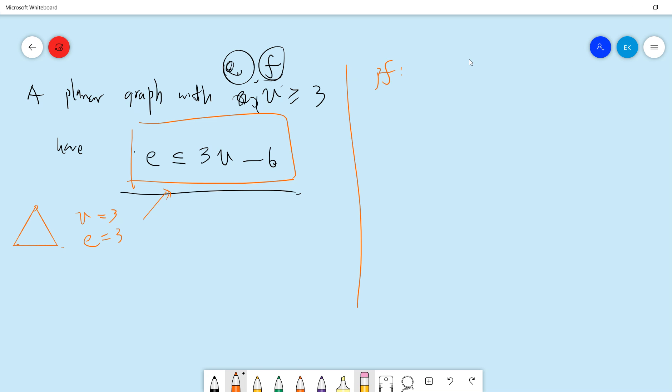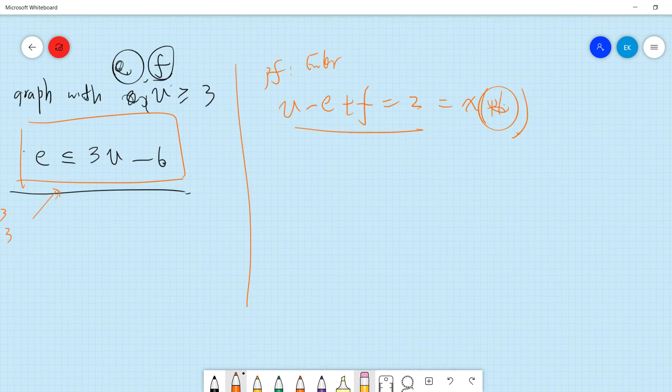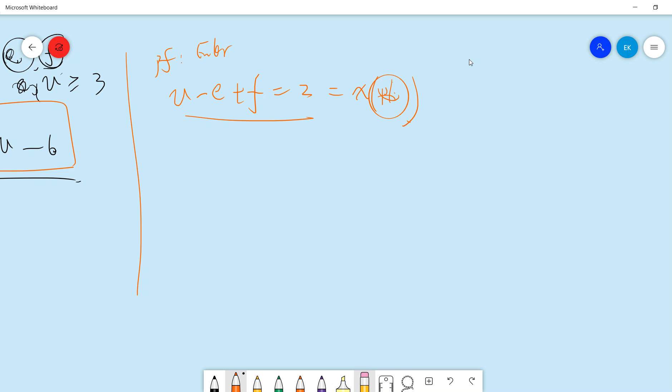Okay, so the proof is basically just using the Euler formula, so V minus E plus F is 2, right, so this is the Euler formula for planar graph. Well, basically, this is the Euler characteristic for a plane, for a sphere, right, so you can view it as the topological quantity. Yeah, so this is the sphere.